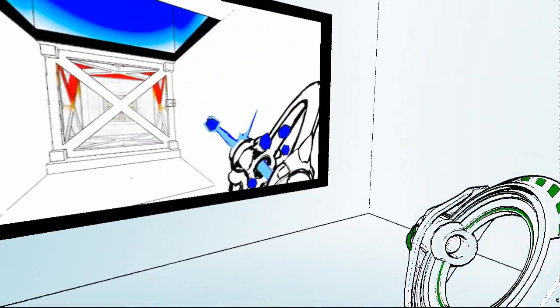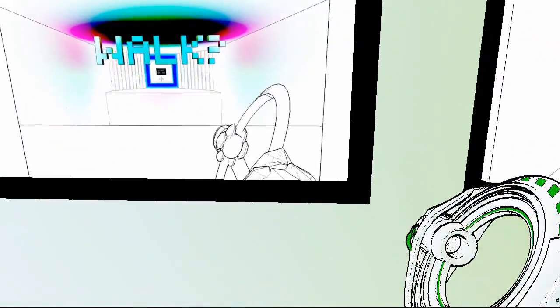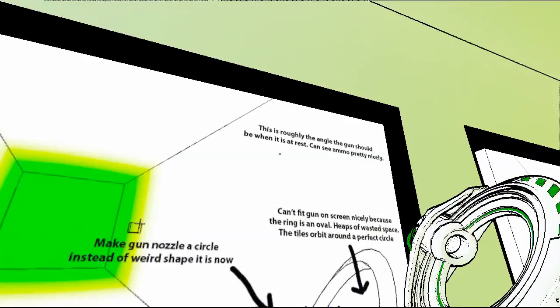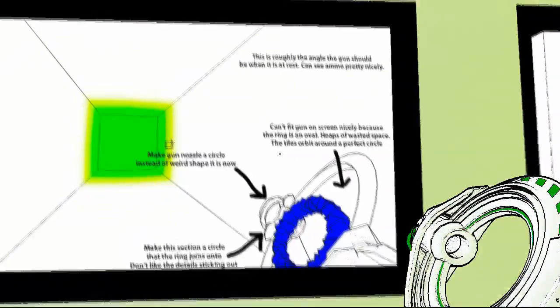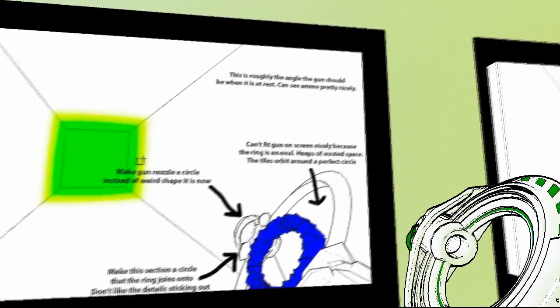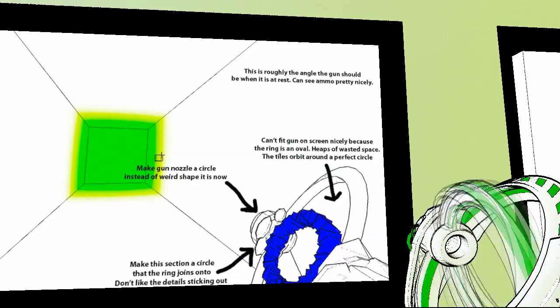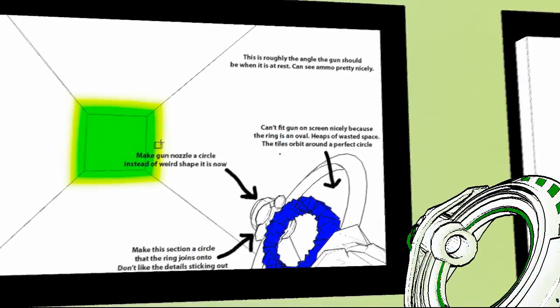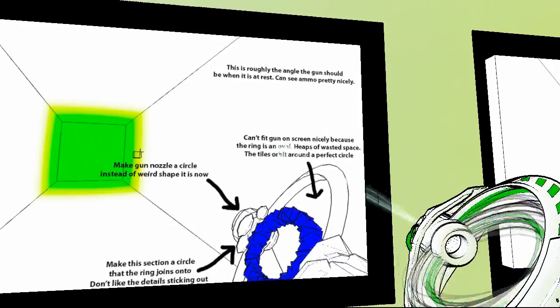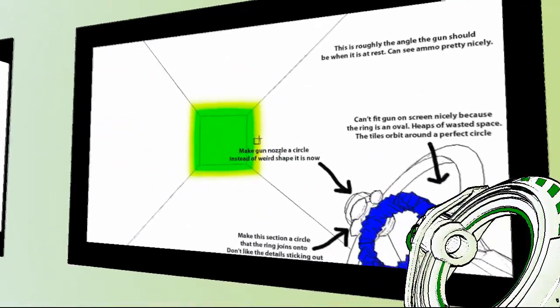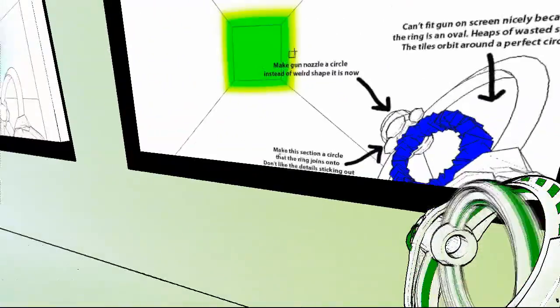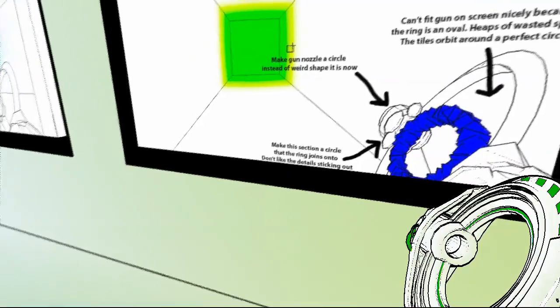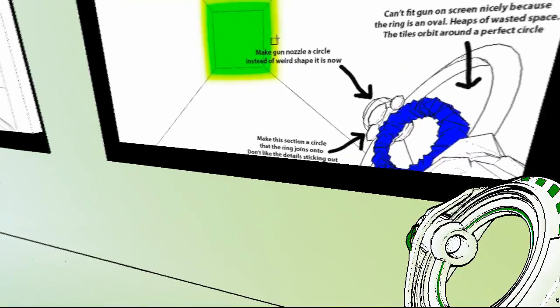So there's the red gun and the blue block. There's a different design of the blue gun. Another design of the guns. Right? This is roughly the angle the gun should be when at rest. You can see ammo pretty nicely. Can't fit gun on screen nicely, because the oval ring... Heaps of wasted space. The tiles orbit around a perfect circle. Makes gun nozzle a circle. Instead of weird shape it is now. Make this section of ring... That the ring joins onto. Don't like the details sticking out.